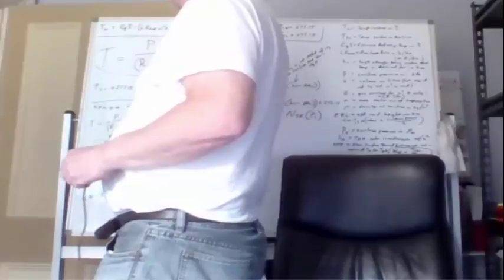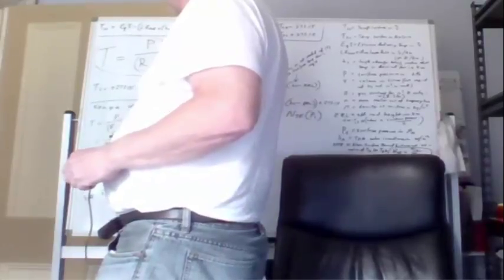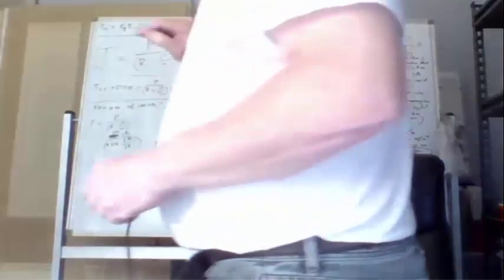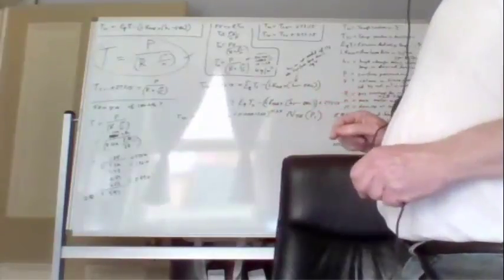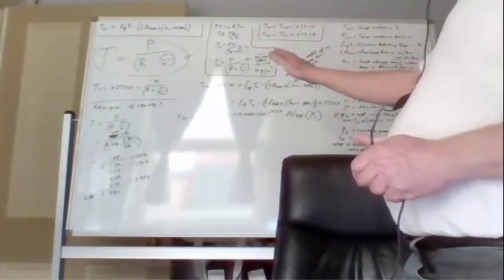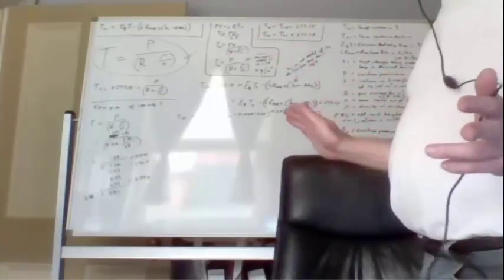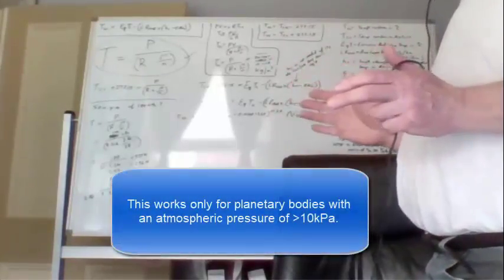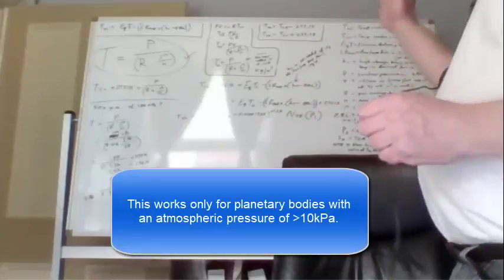The temperature comes from just knowing three gas parameters: average surface pressure, average surface density, and mean molar weight of the near-surface atmosphere. You need those three gas parameters, and you can get the temperature.